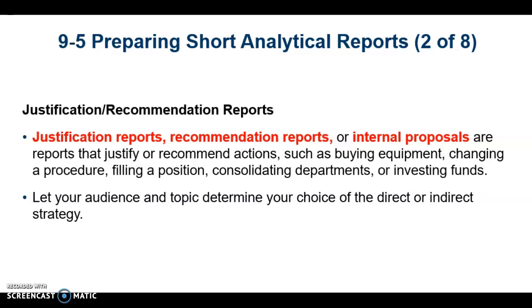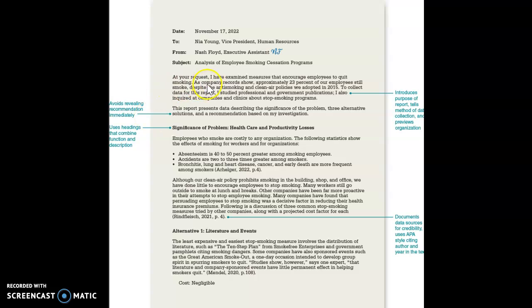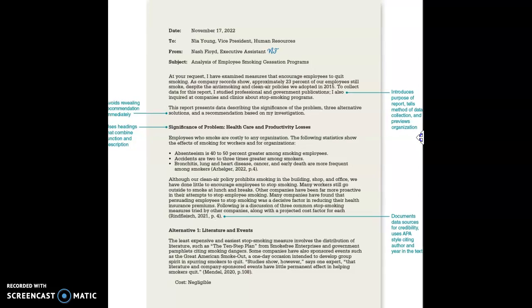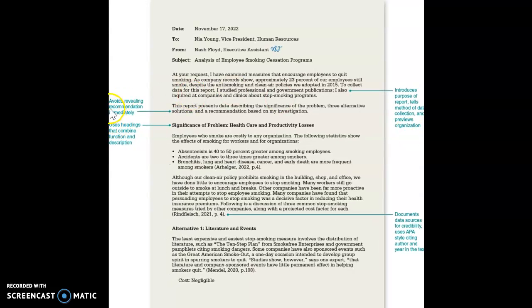Model document 9.7 provides a sample justification recommendation report in APA style. The first paragraph introduces the purpose of the report, tells the method of data collection, and previews the organization. It avoids revealing the recommendation immediately and uses headings that combine function and description.